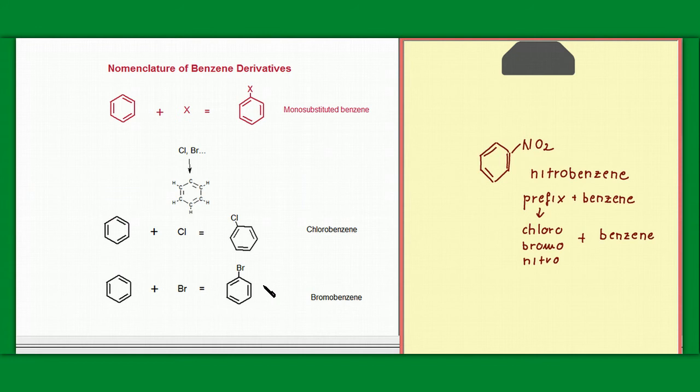All hydrogen atoms of the benzene ring are equivalent. Therefore only one monosubstituted product is possible. We do not have to identify the position of the substituent.